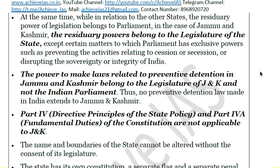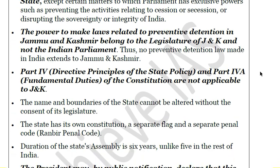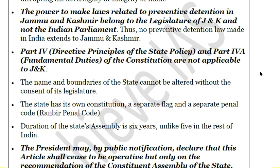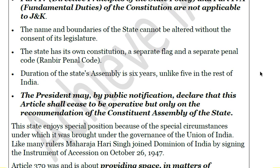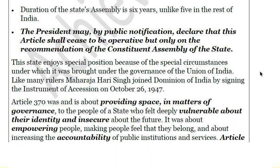Part IV — the Directive Principles of State Policy — and Part IVA on Fundamental Duties are also not applicable to J&K. The name and boundary of the state cannot be changed, the penal code is different — India has the Indian Penal Code while J&K has the Ranbir Penal Code — and the state has a separate flag. The duration of the legislative assembly is six years, unlike five years in the rest of India. The President may by notification declare that Article 370 shall cease to be operative, but only on the recommendation of the Constituent Assembly of the state.